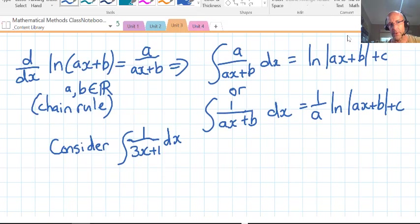So for example if we had something like the integral of 1 over 3x plus 1 dx, we would have the result 1 third natural log of 3x plus 1 absolute plus c.